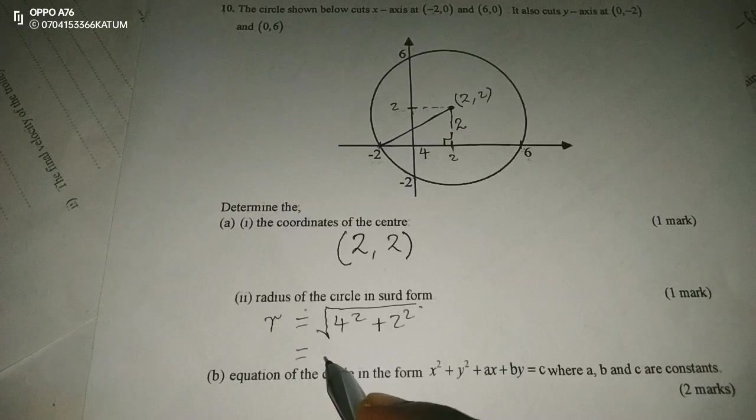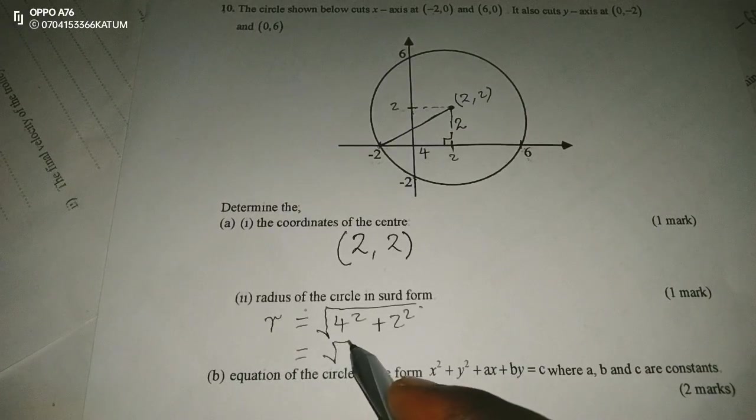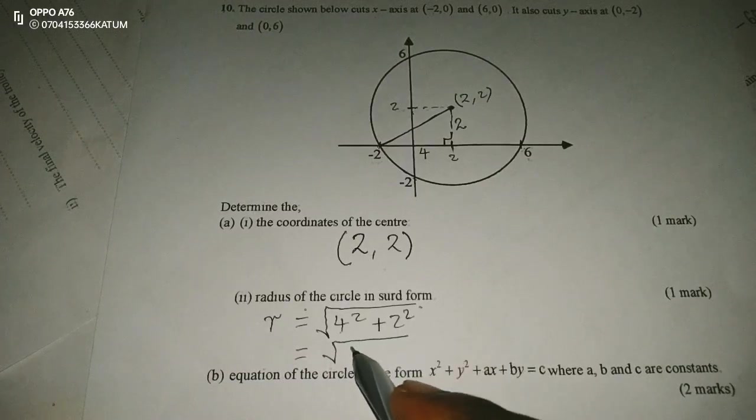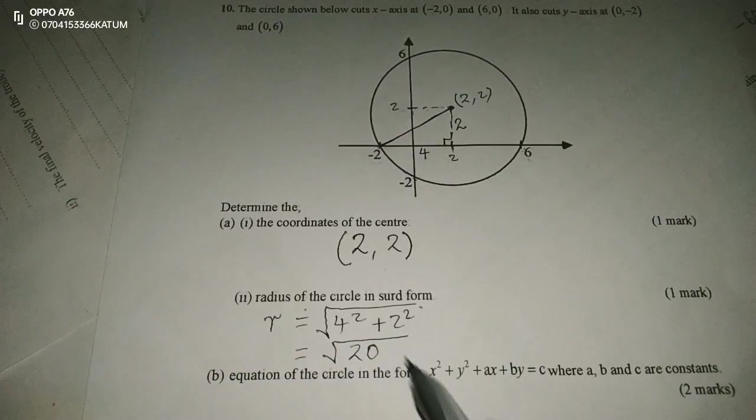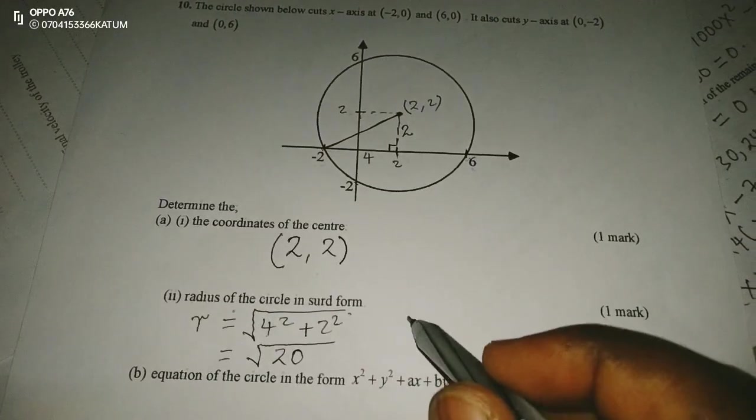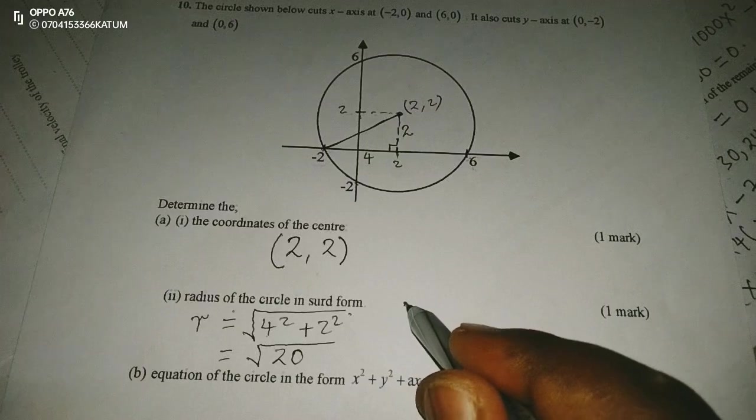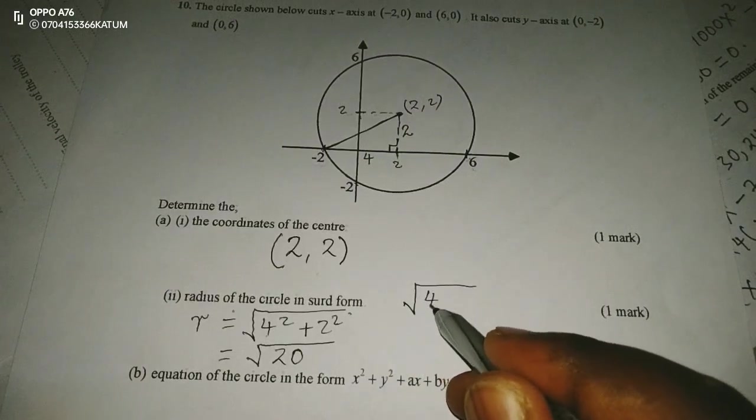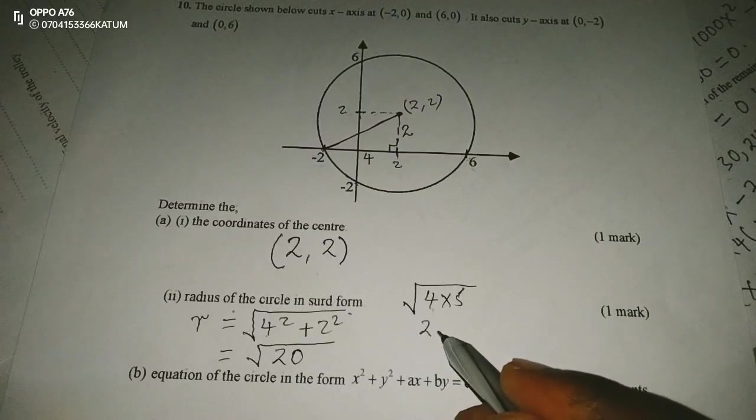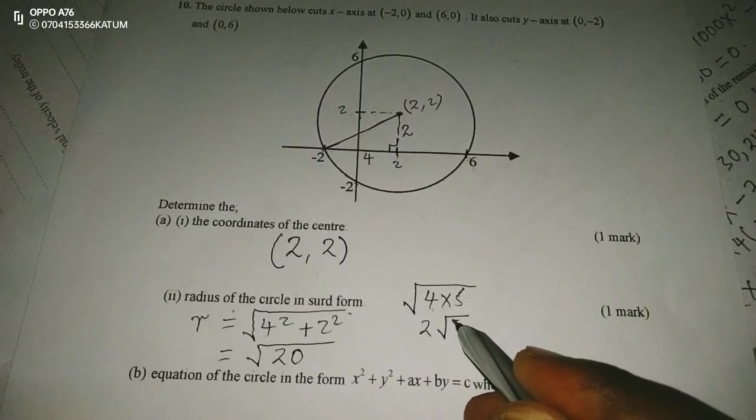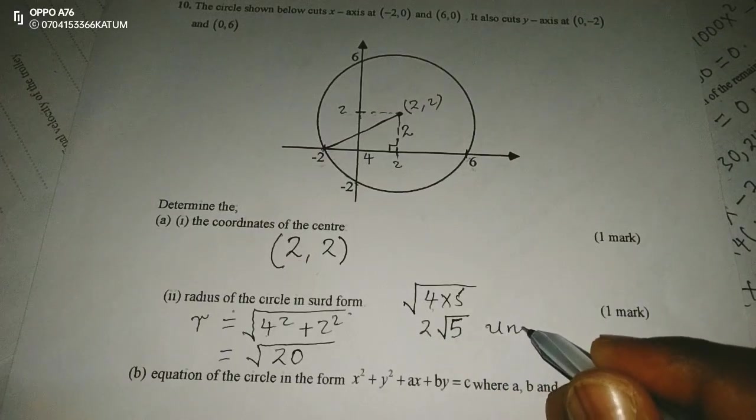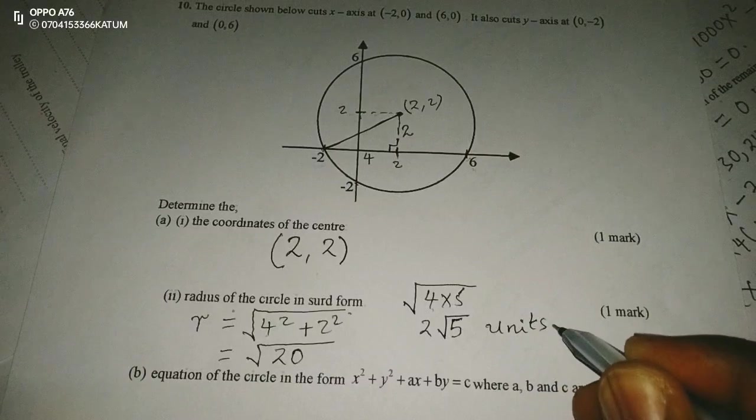This is going to be the square root of 16 plus 4. This is going to be the square root of 20. And to leave it in surd form, we can say that inside 20 is 4 by 5. So the square root of 4 is 2, but the square root of 5 is not. Therefore, the radius is going to be 2√5 units.